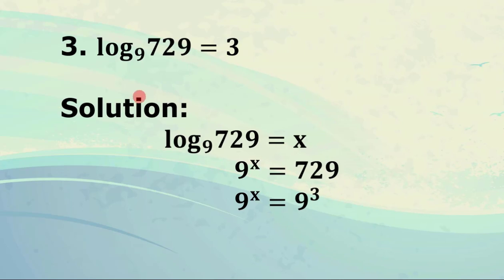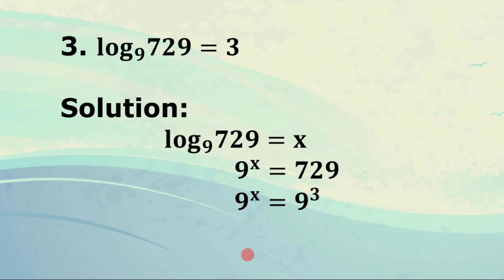For number 3, log of 729 to the base 9 equals 3. We let log of 729 to the base 9 equal x. Written in its equivalent exponential form, we have 9 raised to x equals 729. Since 729 can be written as 9 cubed, we get 9 raised to x equals 9 cubed, so x equals 3.